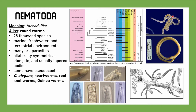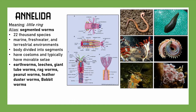Working our way along, we have Annelida, which means 'little ring.' These are known as segmented worms — the OG worm, as it were. There are 22,000 species in marine, freshwater, and terrestrial environments. Their bodies are divided into segments, hence segmented worms. They have true coeloms, as opposed to the pseudocoelomate nematodes and the acoelomate flatworms. They typically have movable setae — bristles or hair-like structures. Representative species include earthworms, parasitic leeches, giant tube worms, ragworms, peanut worms, bobbit worms, and even feather duster worms.